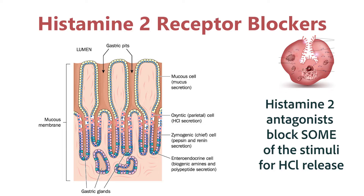The histamine 2 antagonists are competitive antagonists. They compete with histamine 2 that's trying to bind to that same receptor. As you can imagine, if there's less histamine 2 binding onto its receptor, there'll be fewer hydrogen ions secreted and a reduced acidity in the stomach. In fact, the histamine 2 receptor blockers can be about 80% effective in reducing the acid secretion from the parietal cells in the stomach.